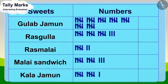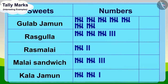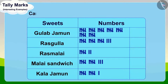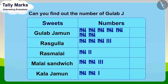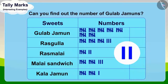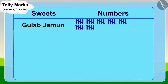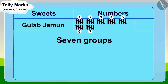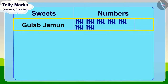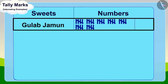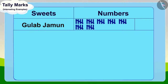Children, can you find out the number of Gulab Jamuns written in Appu's table? You can stop the video and find the answer. Well done — your answer is absolutely correct. There are seven groups of five tally marks, so the total number of Gulab Jamuns will be seven times five, which is thirty-five.